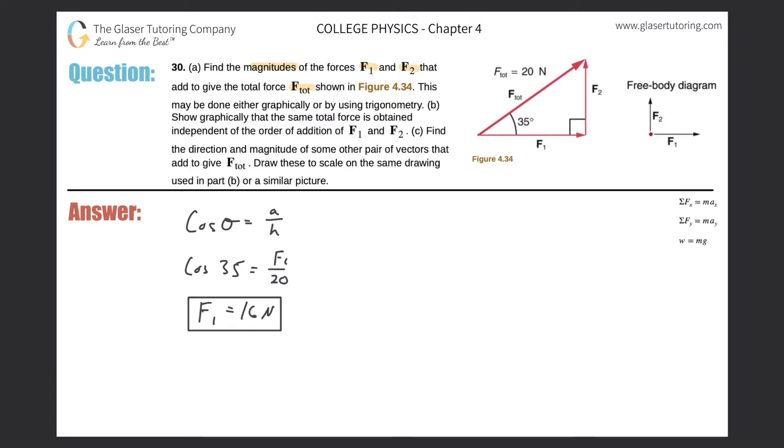Now let's take a look at F2. F2 is over here. Same procedure. I'm going to use the hypotenuse again of 20. I know this angle. I'm looking for the side opposite of that angle. Therefore, we're going to use sine.